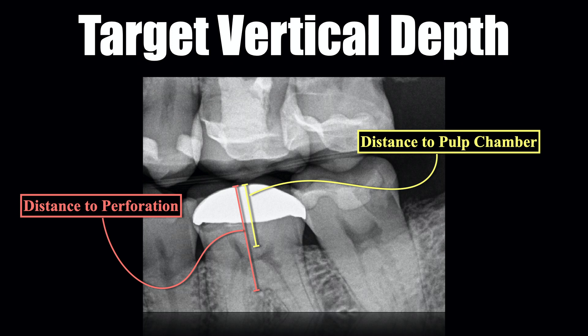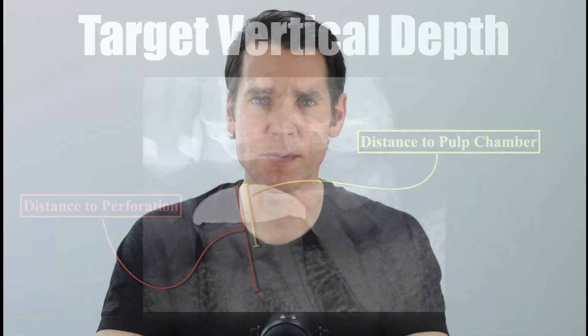I have these predetermined depths available and it's critical, because if I reach my target vertical depth during my access preparation and I don't see what I expect to see, I'm in the wrong place. That clues me to stop, look, and redirect as necessary. And I'm always certain to avoid that target depth to perforation.